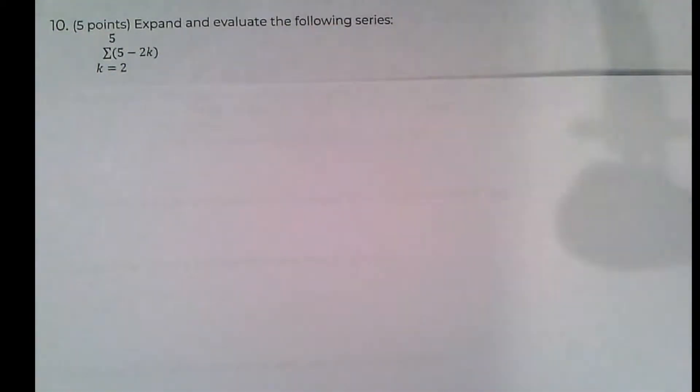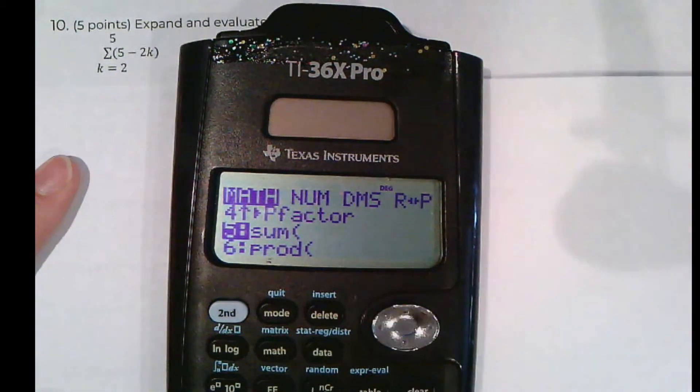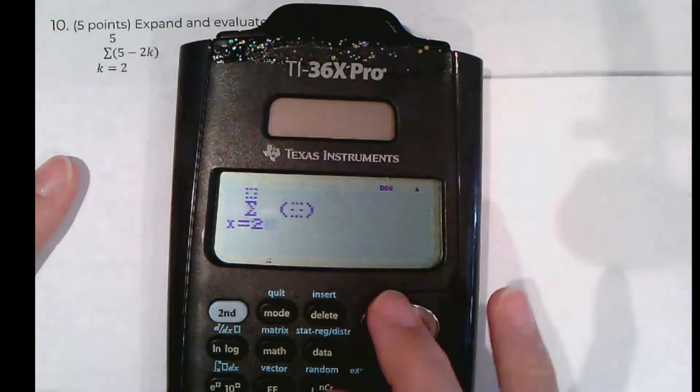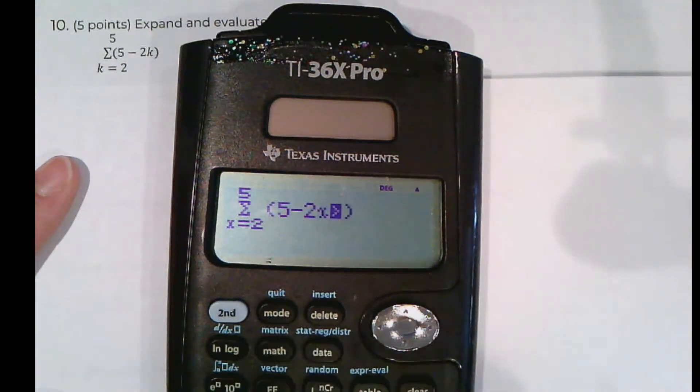Alright, so number 10 tells us to expand and evaluate the following series. We know we can get the answer by using the math button in our calculator and choosing sum. I can tell it goes from 2 to 5. Only thing is I'm going to use x instead of k, so 5 minus 2x. So I already know the answer is negative 8.